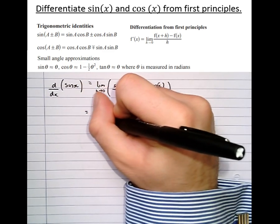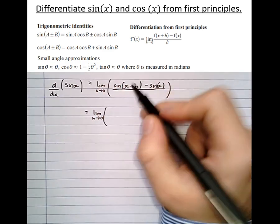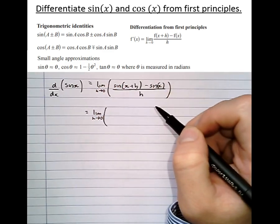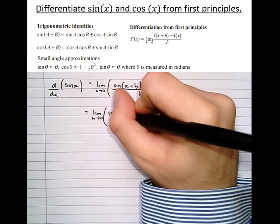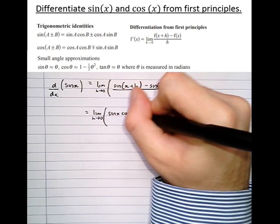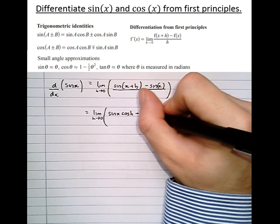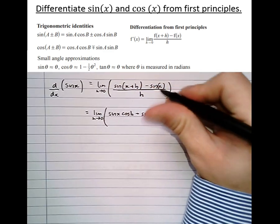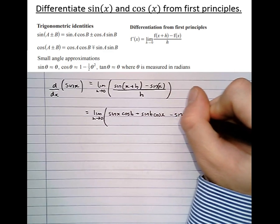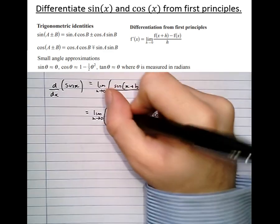Notice that we can expand this sin(x+h) using the compound angle formula for sine, so that becomes sin x cos h plus sin h cos x, then we take sin x, close brackets.